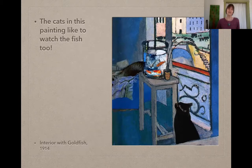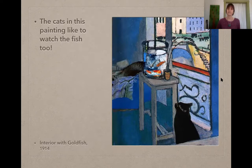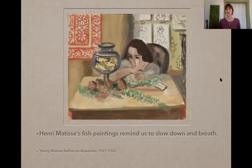This piece is called Interior with Goldfish and was painted in 1914. Henry Matisse's fish paintings remind us to slow down and breathe. This piece is called Young Woman Before an Aquarium and was painted in 1921 to 1922. So I think it might be nice for us to make our own fish aquarium so that when we want to stop and just contemplate and breathe, we can do it too.